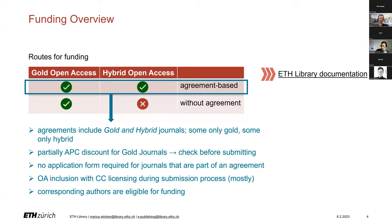The biggest advantage of these agreements is reducing administrative work for both sides — the researchers and the libraries. For this purpose, workflows are set up for each agreement. To ensure that they work properly, I can highly recommend to always submit your paper with your ETH email address. While submitting or after acceptance, you must sign a Creative Commons license if you decide to publish open access, which I would highly recommend. Please keep in mind that only corresponding authors are generally eligible for funding.